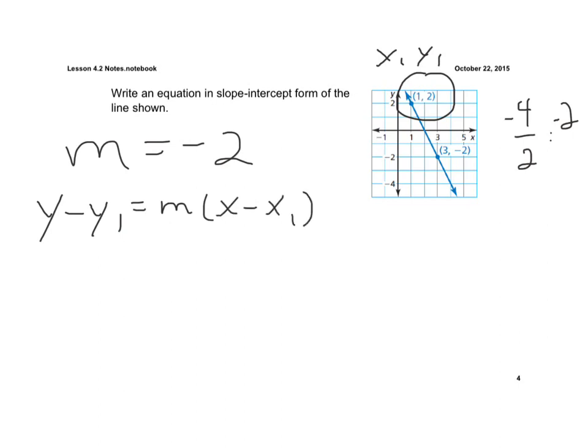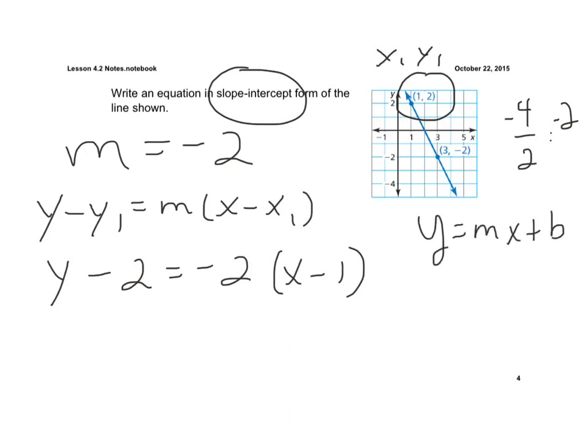So we're just going to substitute in what we know. y minus 2 is equal to a negative 2, which is my m, times x minus 1. But they want us to write it now into slope-intercept form, which is y equals mx plus b. So now we have to simplify this.